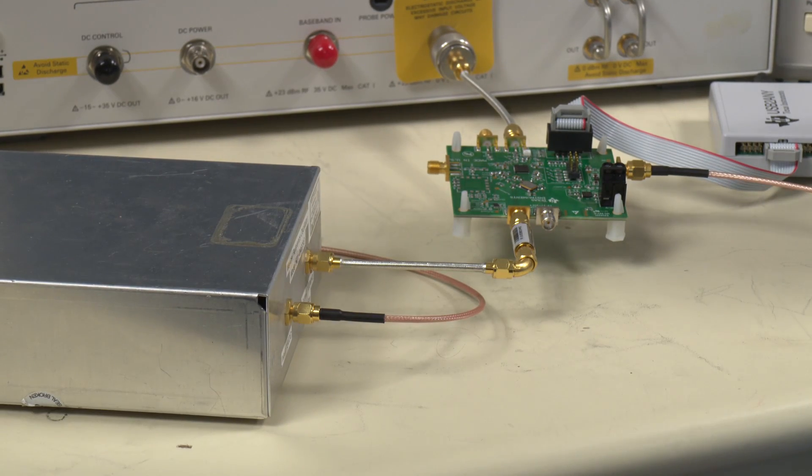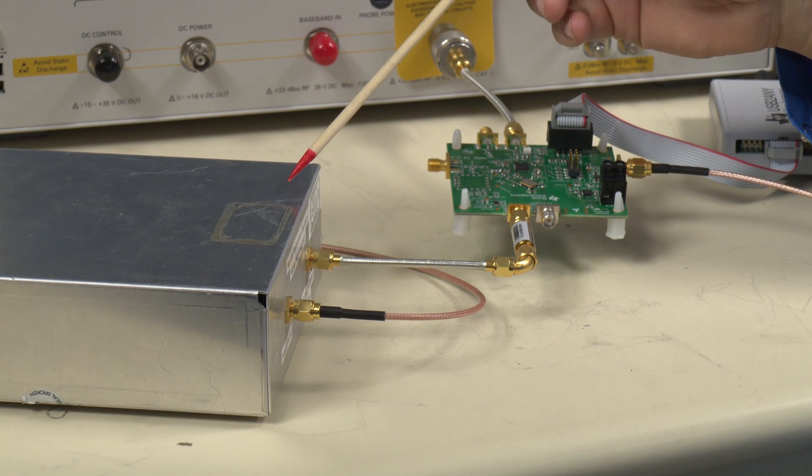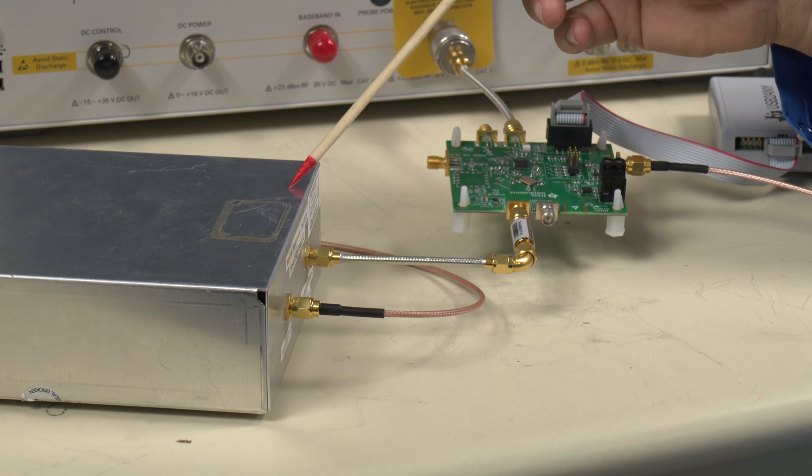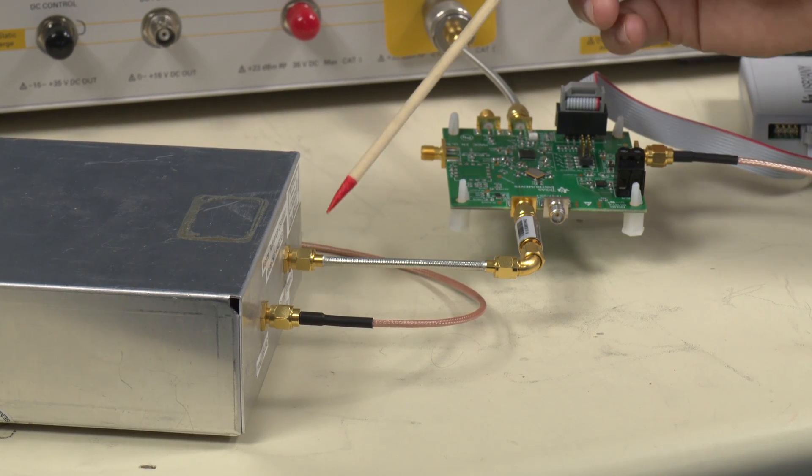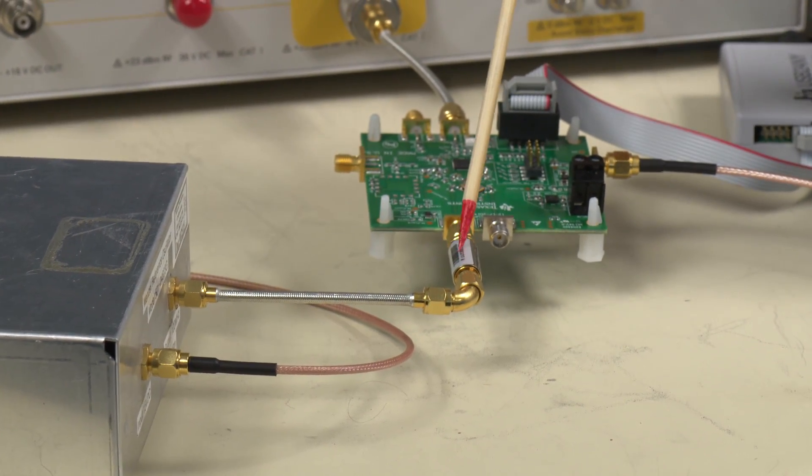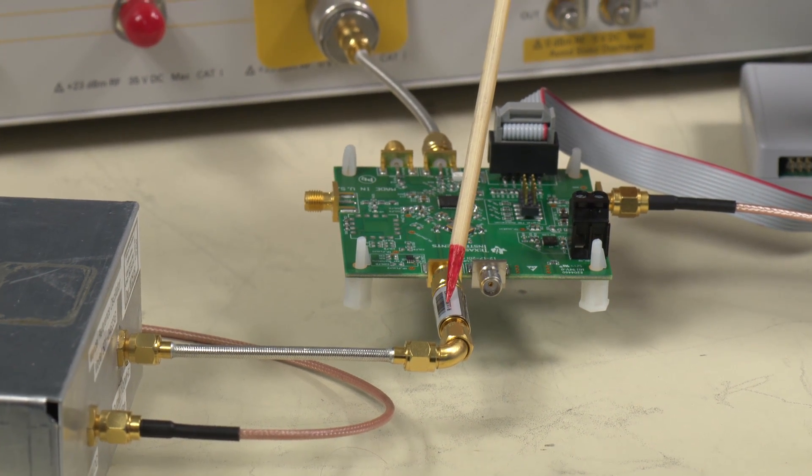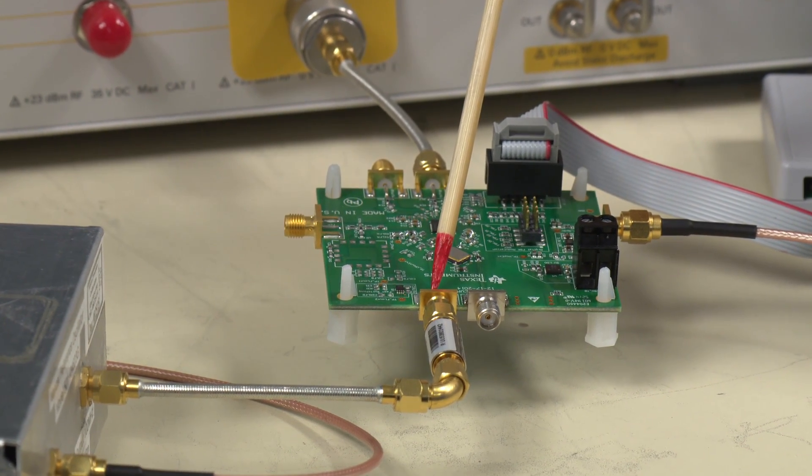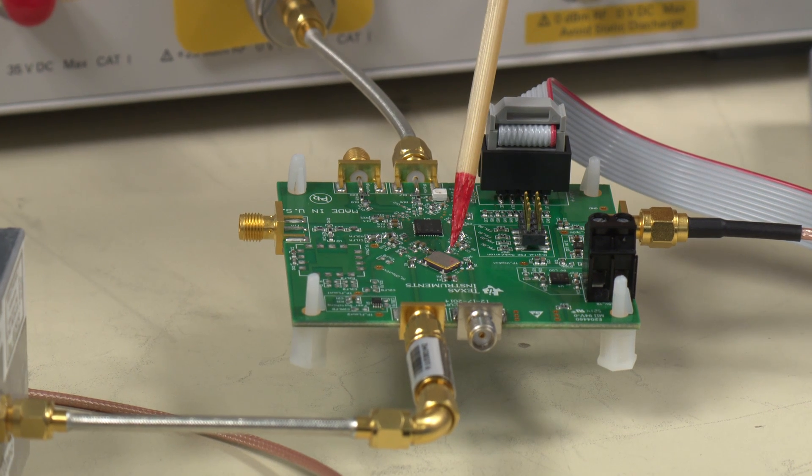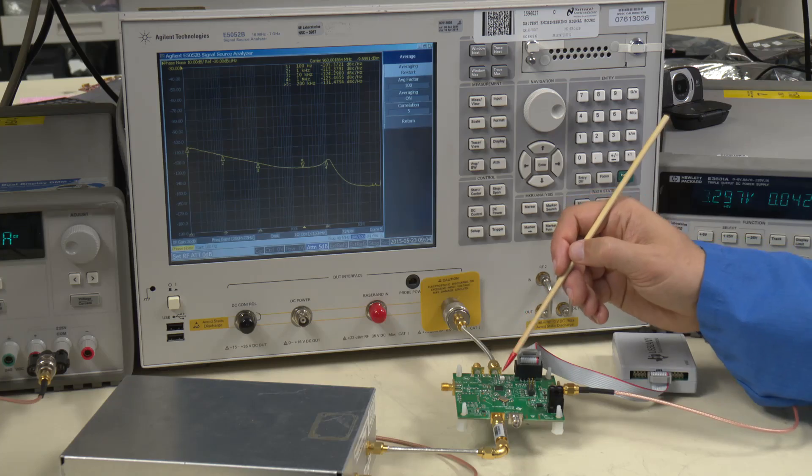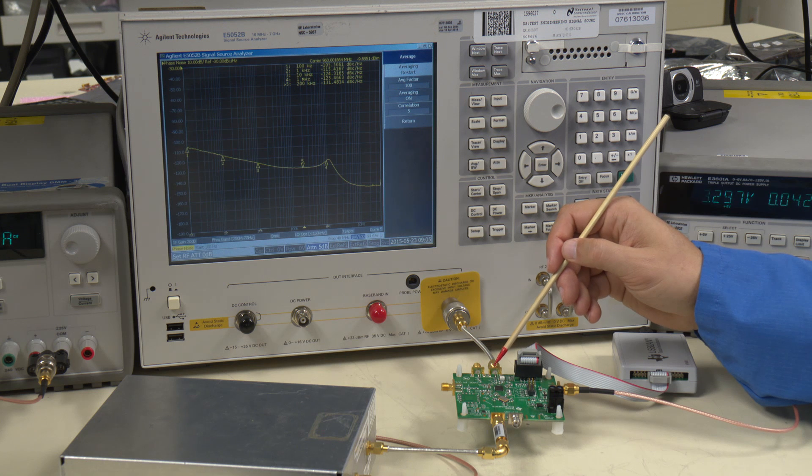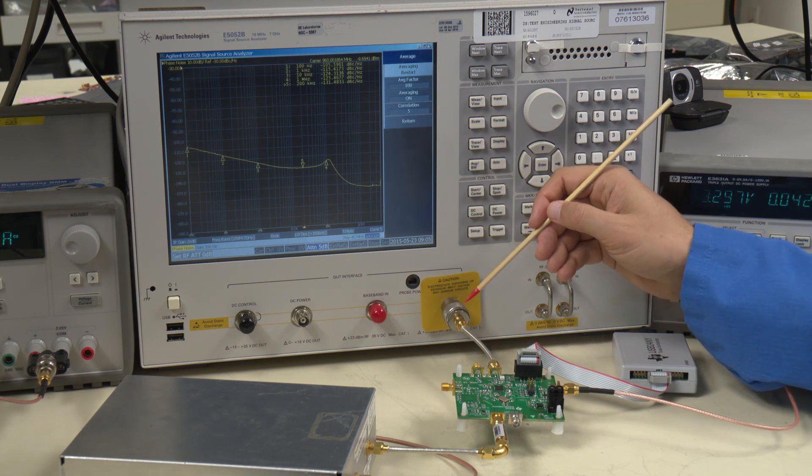To measure the PLL phase noise, we're going to start with a Wenzel 100 MHz crystal. This is very, very clean. It's high output power plus 14 dBm. And we can be sure that this particular instrument is not going to disrupt our PLL phase noise measurements. The output here at plus 14 dBm is going to go through this limiter, which is going to limit the amplitude of the signal but not degrade the slew rate. And then this is going to come in all the way to the LMX2571, which is here.